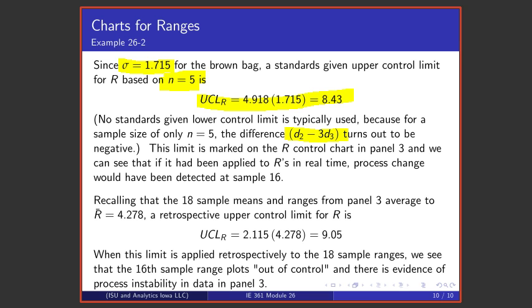If one applies that to the ranges in the data set, one would find that by at sample 16, one would determine that indeed the process standard deviation is no longer 1.715. Something changes between sample 15 and 16, both in terms of process mean and in terms of process standard deviation.